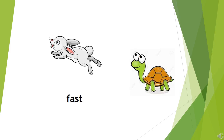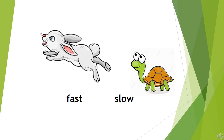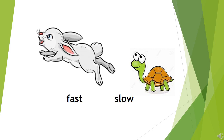The opposite of fast is slow. Fast, slow. Children, say with me: fast, slow. Now children, you all know the story of the hare and the tortoise. Who was fast in that story? Yes — hare was fast and tortoise was slow. Fast means going very quickly, and slow means going with less speed. The hare's speed was faster than the tortoise's speed. Fast, slow.